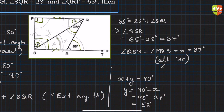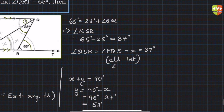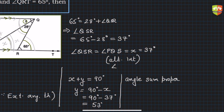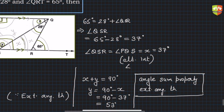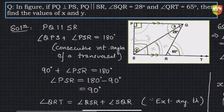So x is 37 degrees and y is 53 degrees. The two key theorems used here are the angle sum property — useful whenever a triangle and angles are involved — and the exterior angle theorem, which states that an exterior angle equals the sum of the two interior opposite angles. I hope you understood the problem.